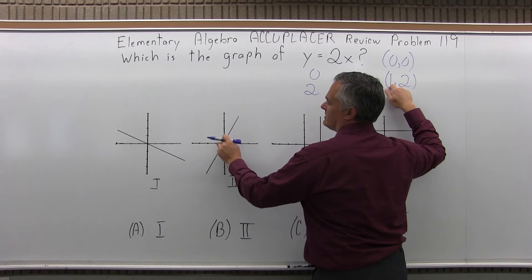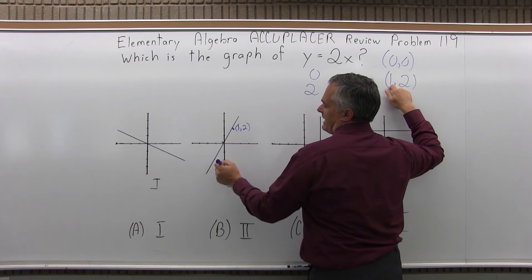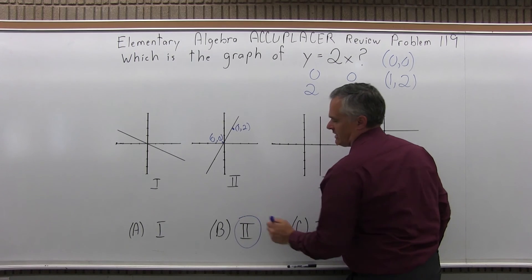Next one, over 1, up 2. Oh, look at that. So if that goes through 0, 0, and over 1, up 2, it has to be option 2. Option 2, or option B, I should say.